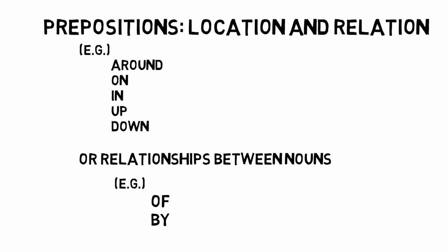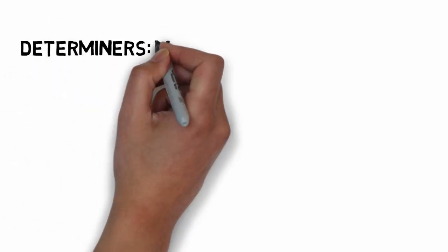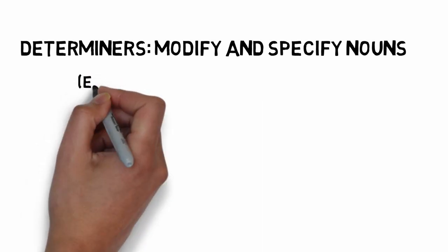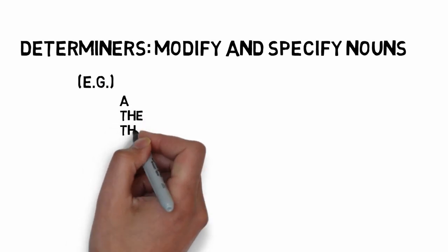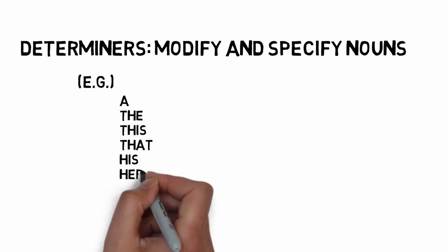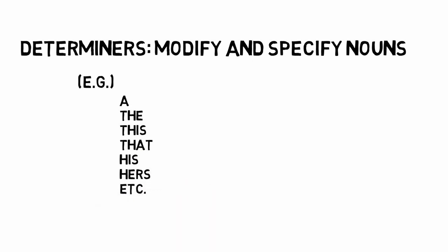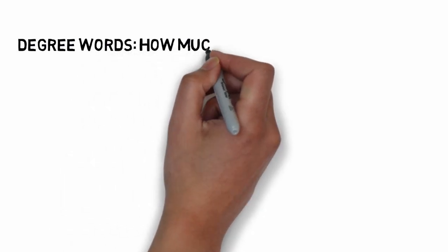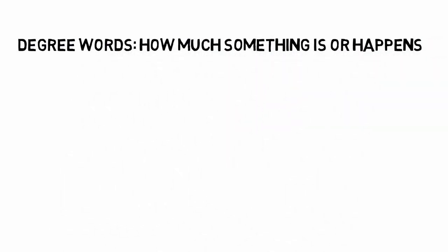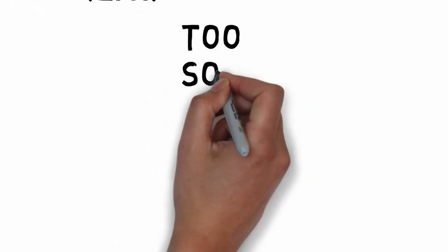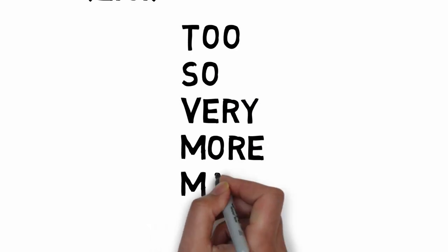Determiners modify and specify nouns. Often called articles in English, they also include demonstratives like 'this' or 'that,' and possessives like 'his,' 'hers,' 'mine,' or 'yours.' Degree words express the degree to which something exists or has happened, such as 'so,' 'very,' 'more,' 'many,' or 'quite.'